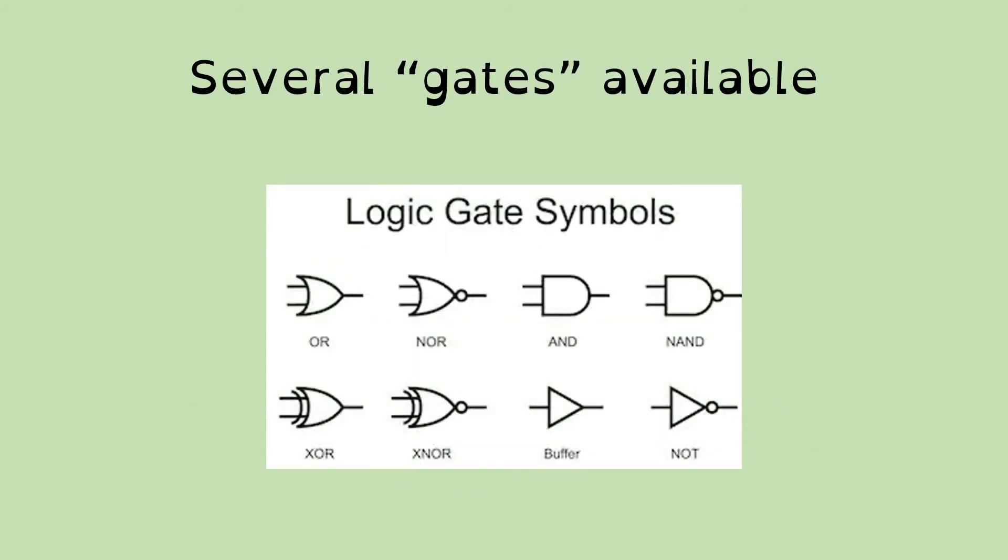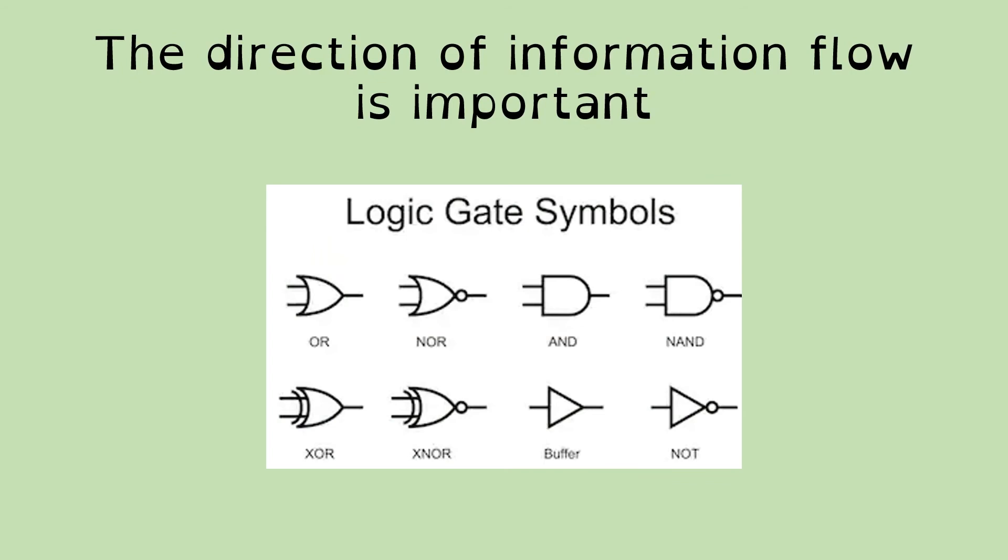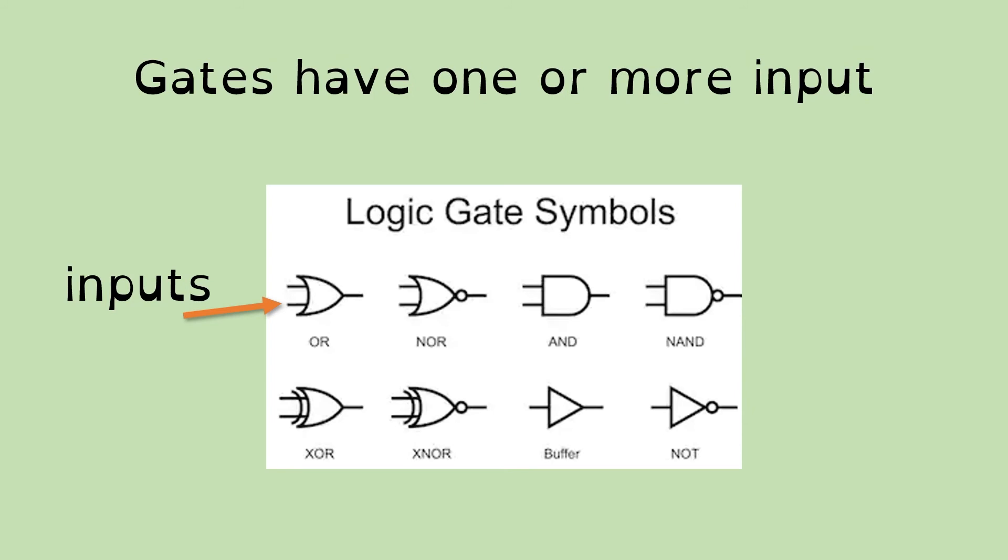And there's a range of different gates that are available that you can use. The direction of information flow is important when we're looking at these symbols. So we've got inputs, which on these pictures here, the way these are laid out, they're on the left-hand side. And each gate has one or more input. You can see most of these have got two. There's a couple of those down at the bottom right that have one. And don't worry about what these exactly do at the moment because the rest of this series of videos actually explores each gate in turn and explains what they do.